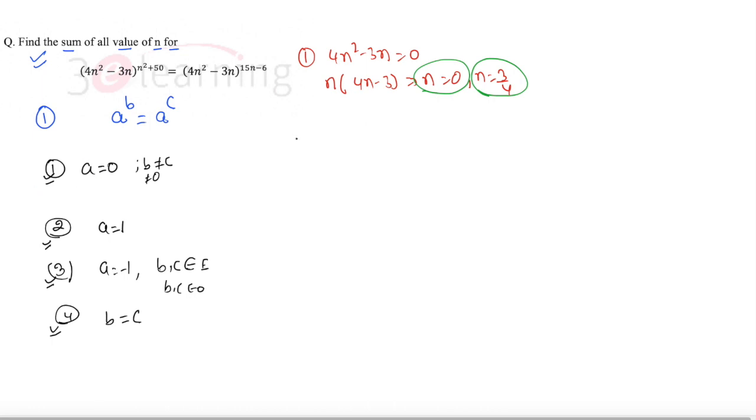Now we need to work on case 2, that is 4n² - 3n = 1. If I do this, 4n² - 3n - 1 = 0. From here we can say the product is -4. Using the basic formula we have (3 ± √(9+16)) / (2×4). This is (3 ± 5) / 8.